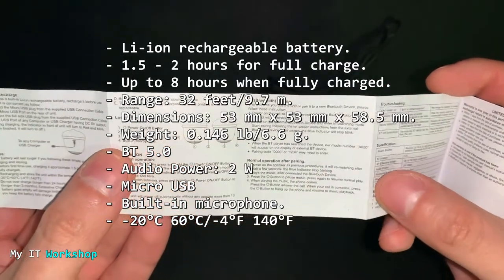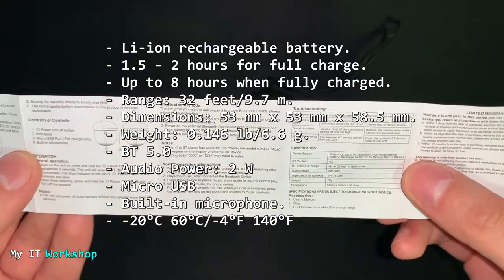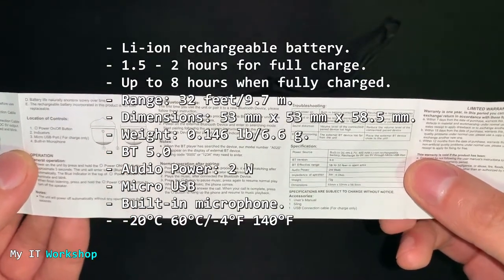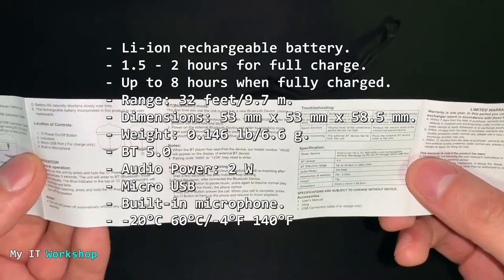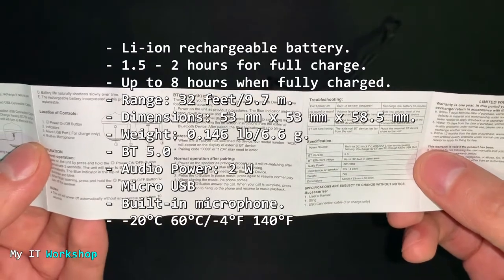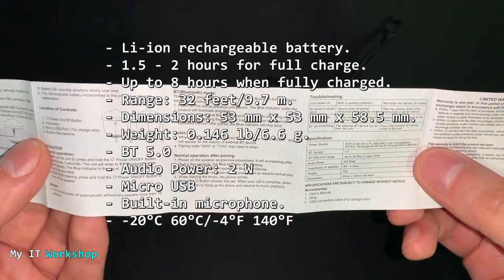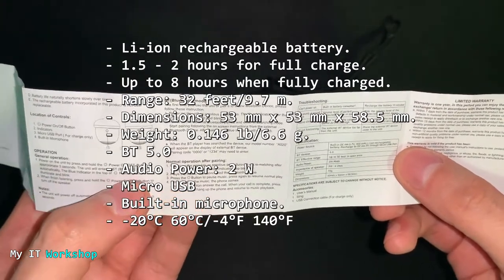The weight is very light, 6.6 grams or 0.146 pounds. It uses Bluetooth 5.0. The audio power is 2 watts, so we're going to test it in a few more seconds. It uses micro USB and has a built-in microphone. You can see the temperature at which it works correctly, so you can avoid exposing it to super hot places or super cold places.